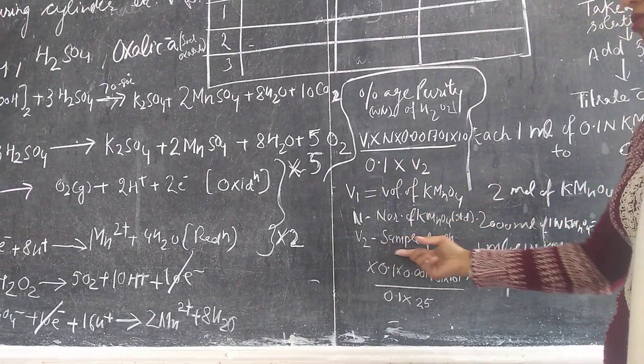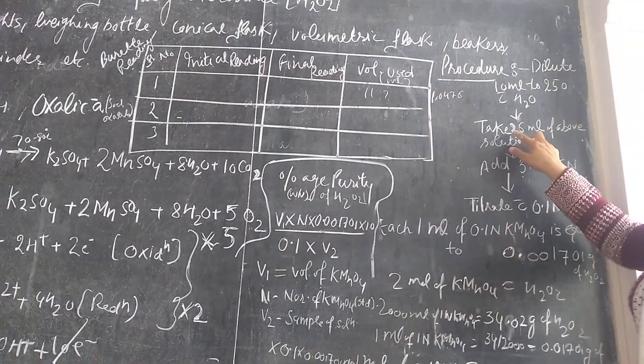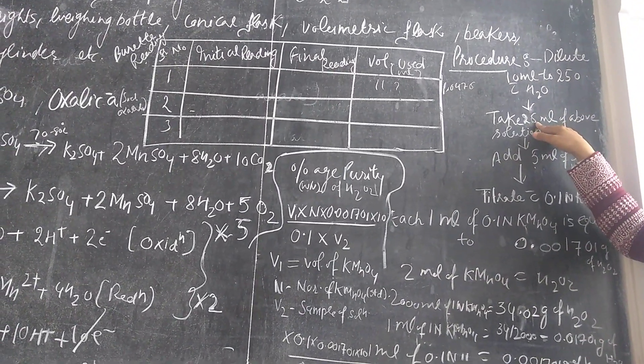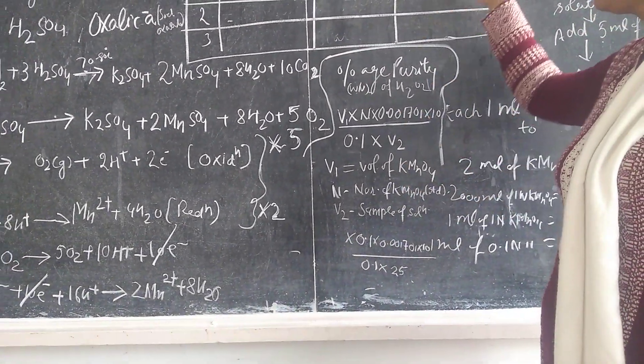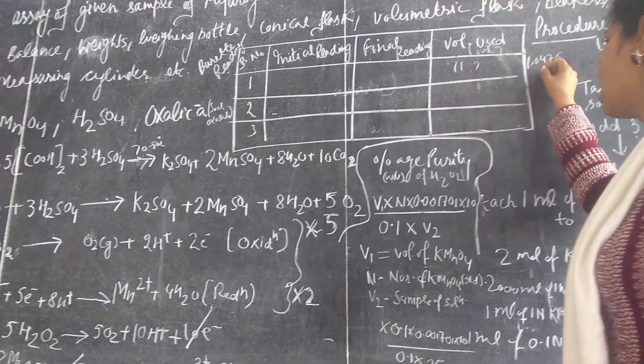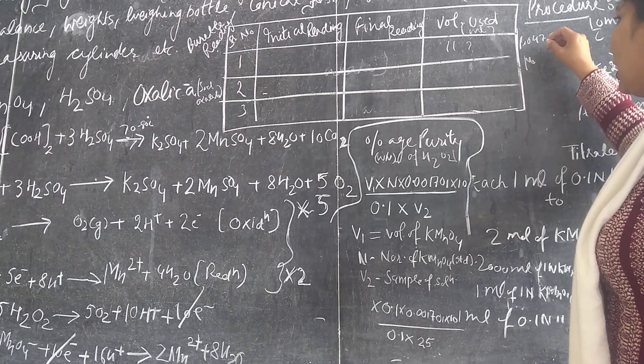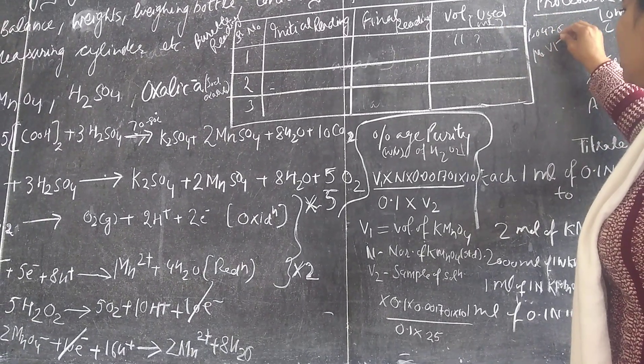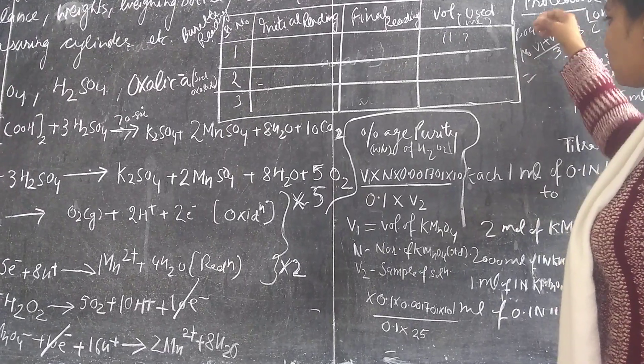Then 10 is your dilution factor, how much starting sample you took. Then divide by 0.1, which is the normality of KMnO4 which was actually required that we were supposed to prepare, times V2. V2 is the sample solution taken after dilution, that is 25 ml. So here we put 25 ml.